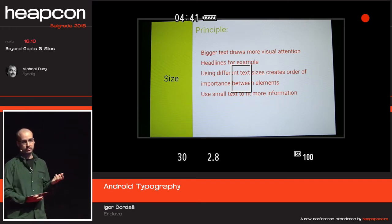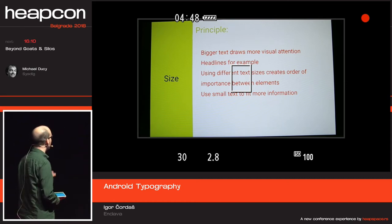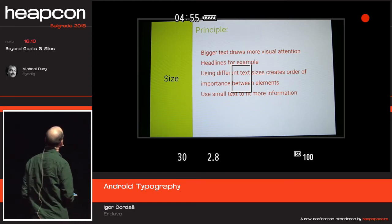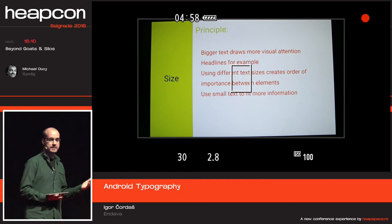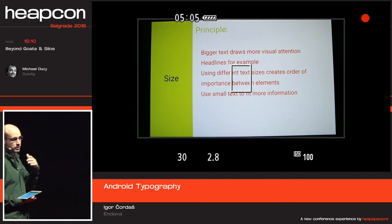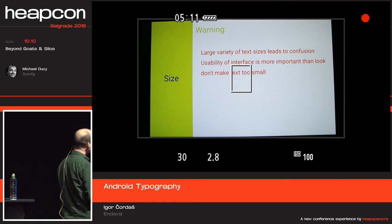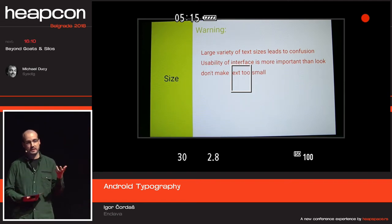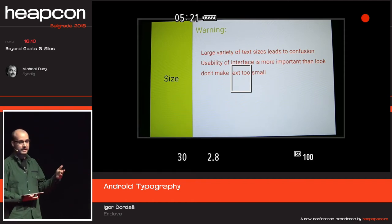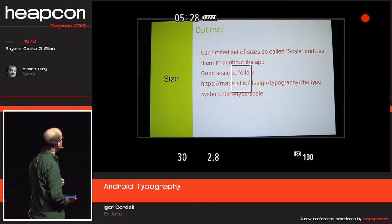What's also quite important about text is the size. We all know something seems important if it's large — that's why headlines are large. Using multiple sizes for elements can create an order of importance; subconsciously the user knows which element is more important. But if you have too many sizes, it creates confusion — the user needs to compare seven sizes to decide which one is larger. So keep your sizes to a certain set, usually called the scale. A good scale to follow is the Android typography scale.